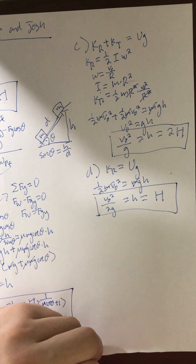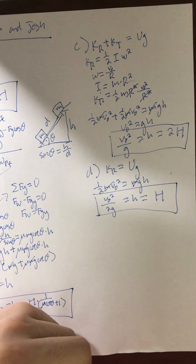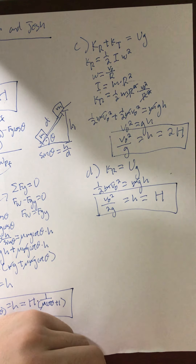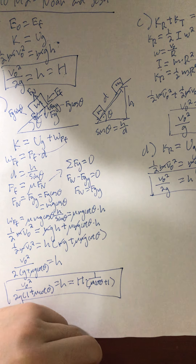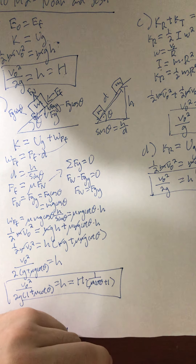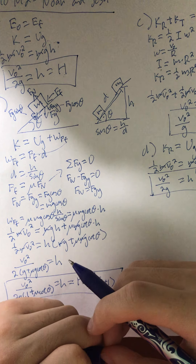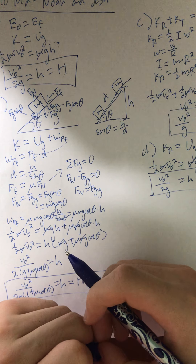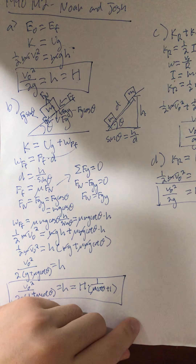That's the end of this problem. We've looked at different types of work and energy, seeing how friction does work that impacts how high an object will rise on an incline, and how rotational energy for a rolling hoop affects the maximum height. That's the problem.